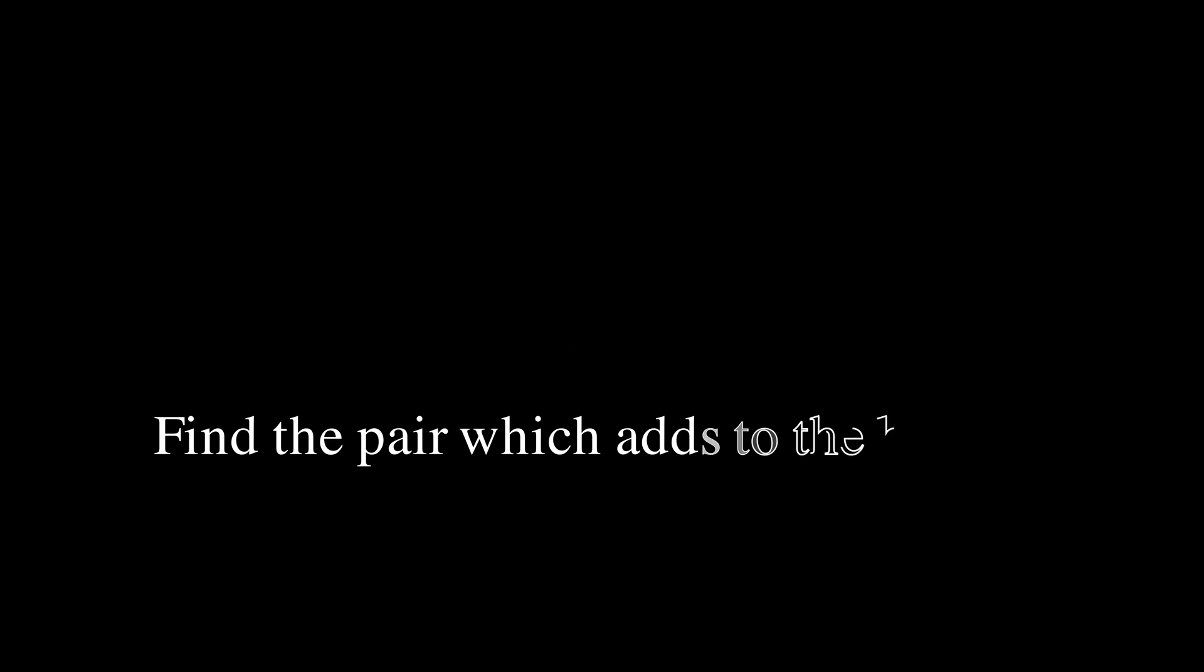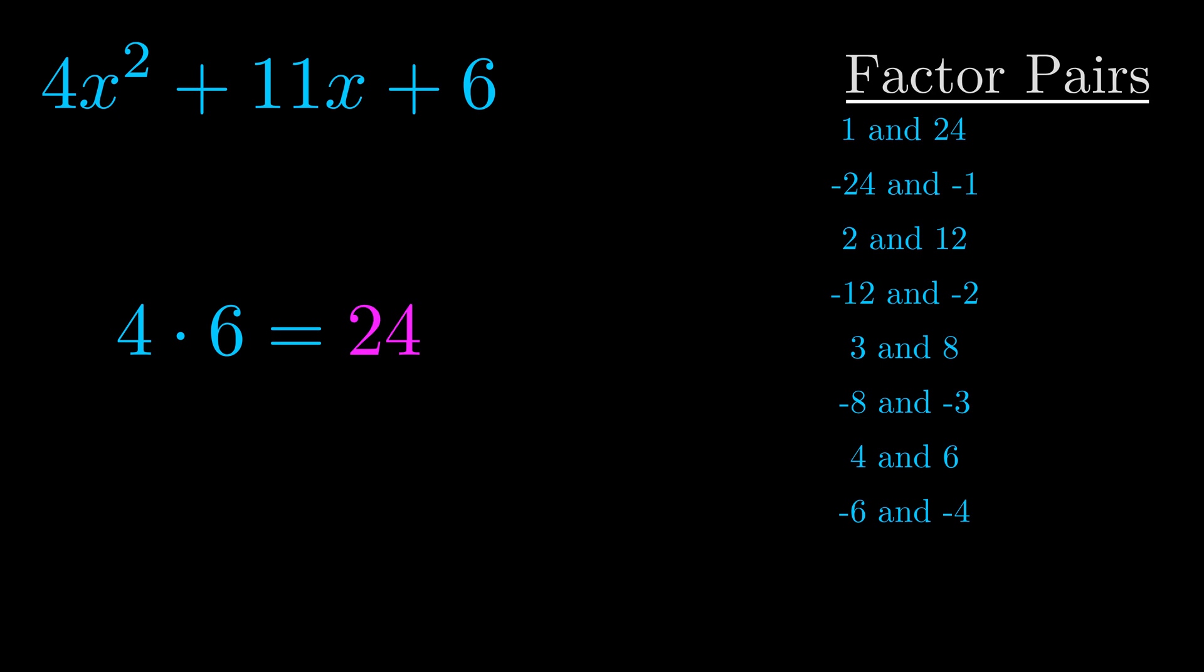The b value is the coefficient on the x term. That's the middle term, the one that we haven't done anything with yet. And really this is the only factor pair that we need.